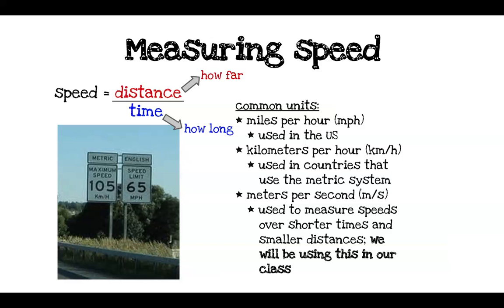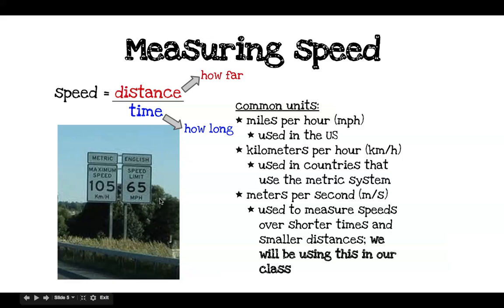You'll also see kilometers per hour, used in any country that uses the metric system. It's abbreviated KM/H — KM for kilometers, and H for hours. On the border of the United States and Canada, you might see a sign showing both the English speed limit and the metric speed limit, to help people traveling back and forth.